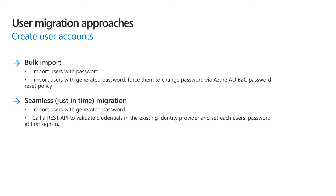In seamless migration, you use a custom policy to query a REST API, which you create, to set the user's password at first sign-in. Use the seamless migration flow in cases where plain-text credentials in the existing identity provider are not accessible.